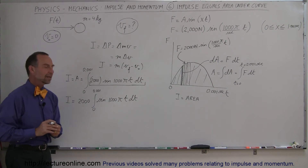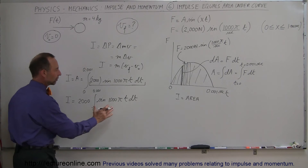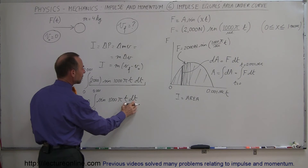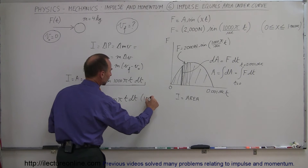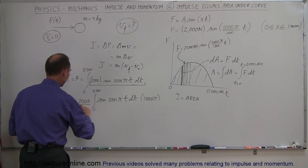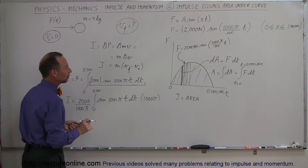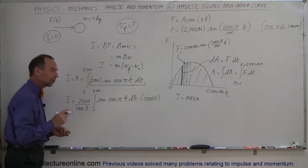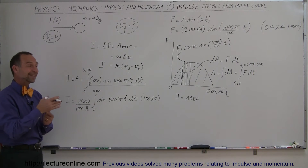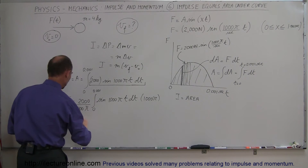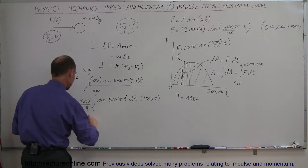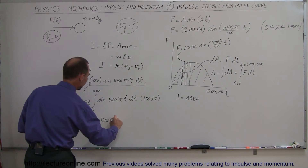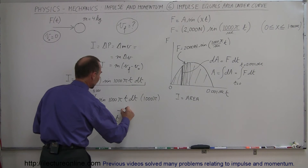Now we have the sine of an angle times dt. To integrate that, we need the proper differential — the proper differential of the angle would be 1,000 pi. Since we don't have a 1,000 pi dt, we multiply by 1,000 pi and divide by 1,000 pi. Now we have sine of theta d theta, so to speak. The integral of the sine is the negative cosine, so this equals 2 over pi times the negative cosine of 1,000 pi times t, evaluated from 0 to 0.001.